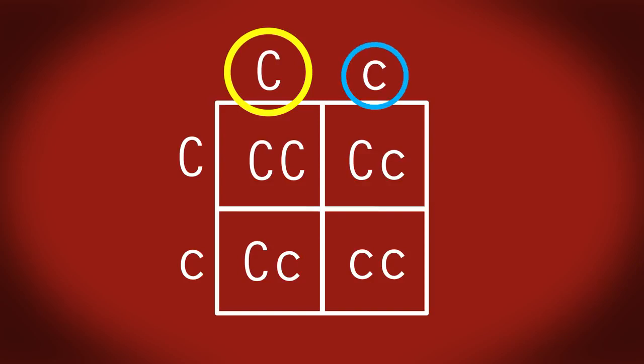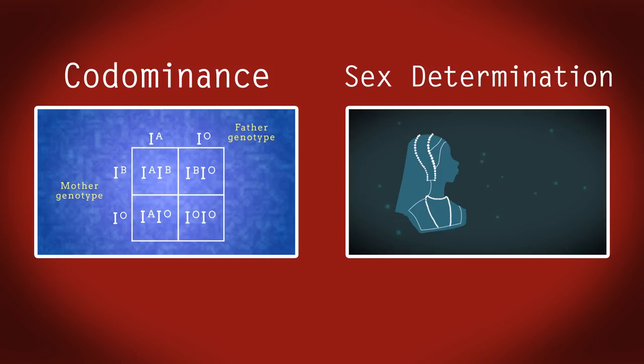So that is Punnett squares. Very useful for looking at the probability of genotypes of offspring. We will look at co-dominance and sex determination in different videos.